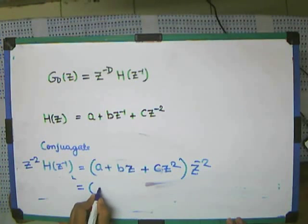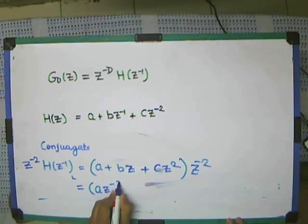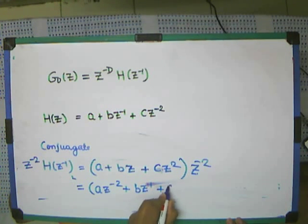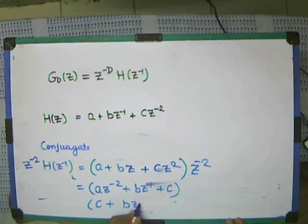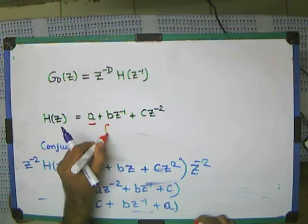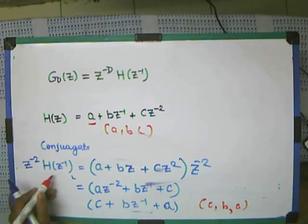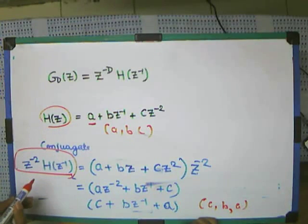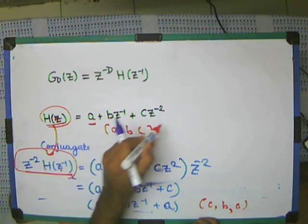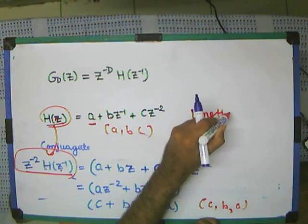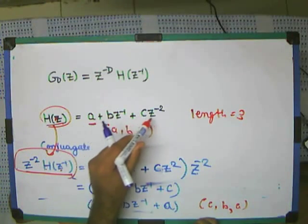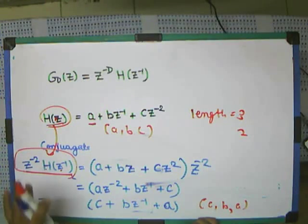So the sequence becomes a·z⁻² plus b·z⁻¹ plus c. Just see how, if I rearrange this signal, it is equal to c plus b·z⁻¹ plus a. Just compare the coefficients: here it is a, b, c; here it is c, b, a. We call this kind of structure the conjugate of h(z). So z raised to the power d times h(z⁻¹) is the conjugate of h(z) for a filter of length 3.